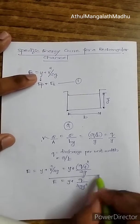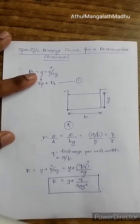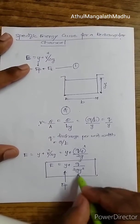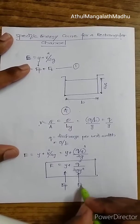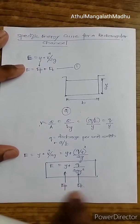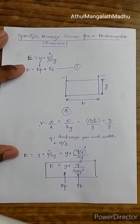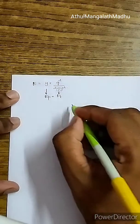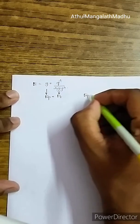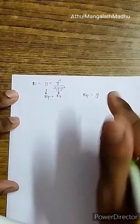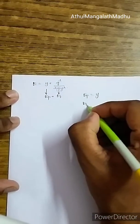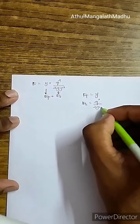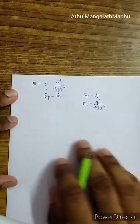This is the equation for specific energy for a rectangular channel, where y is the potential energy EP and q²/(2g·y²) is the kinetic energy EK. So EP = y and EK = q²/(2g·y²).